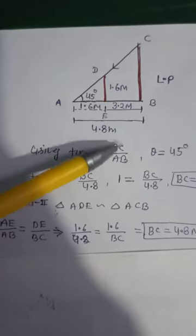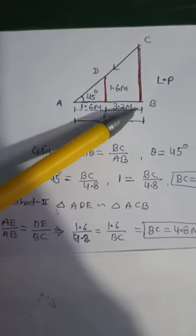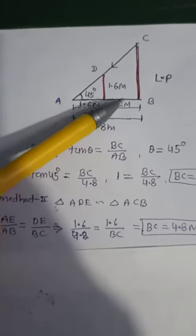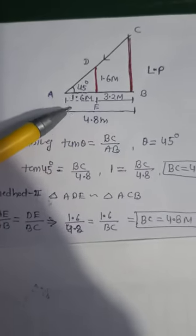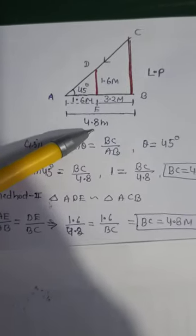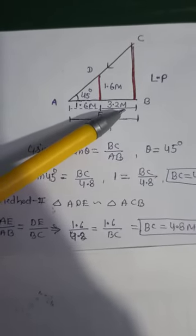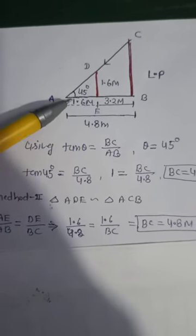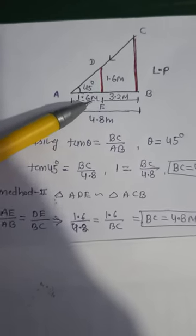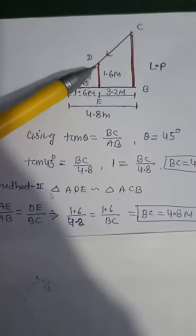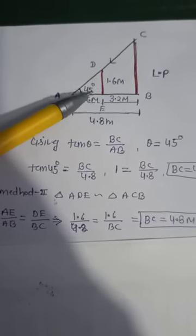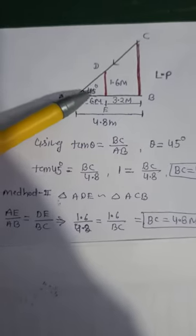BC is a lamppost. So the girl is 3.2 meters away from the lamppost. If we subtract 4.8, you can see that this is a length 3.2. If we subtract A and E, this will be 1.6. We can assume that if this is 1.6, it will be an isosceles triangle because this is 90 degrees and this is 45 degrees.